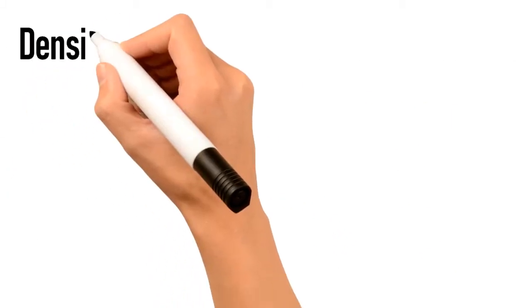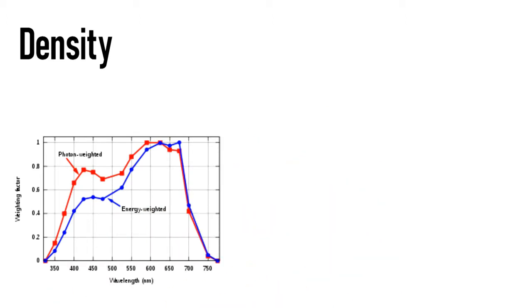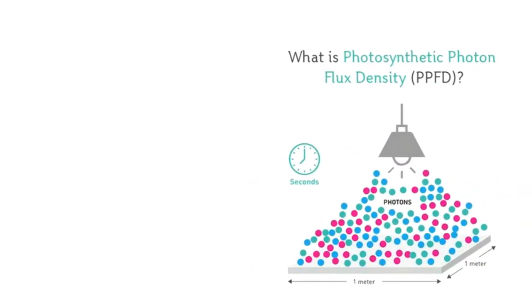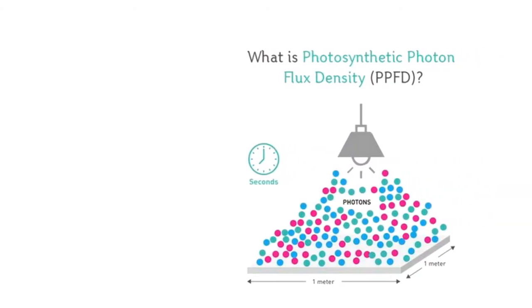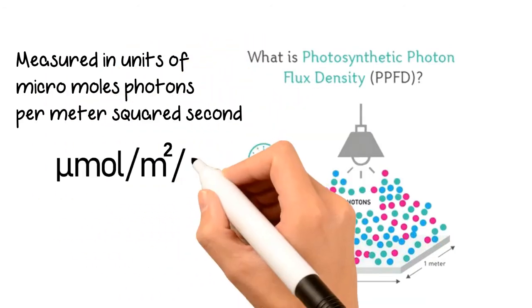The last letter stands for density. Density adds the element of space. Using the analogy of photons as rain, the flux density would be the number of drops of rain, or photons, which are falling within an area over time. So, PPFD means the number of photosynthetically active photons that fall within a specified area over time, and is measured in units of micromoles photons per meter squared second.